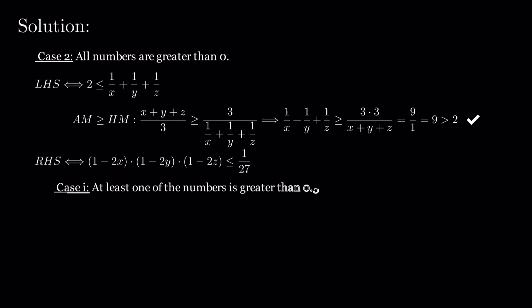The first case, in which one of the numbers is greater than 0.5. Without loss of generality, let x be this number, implying that y and z are less than 0.5. This means that this product is negative.